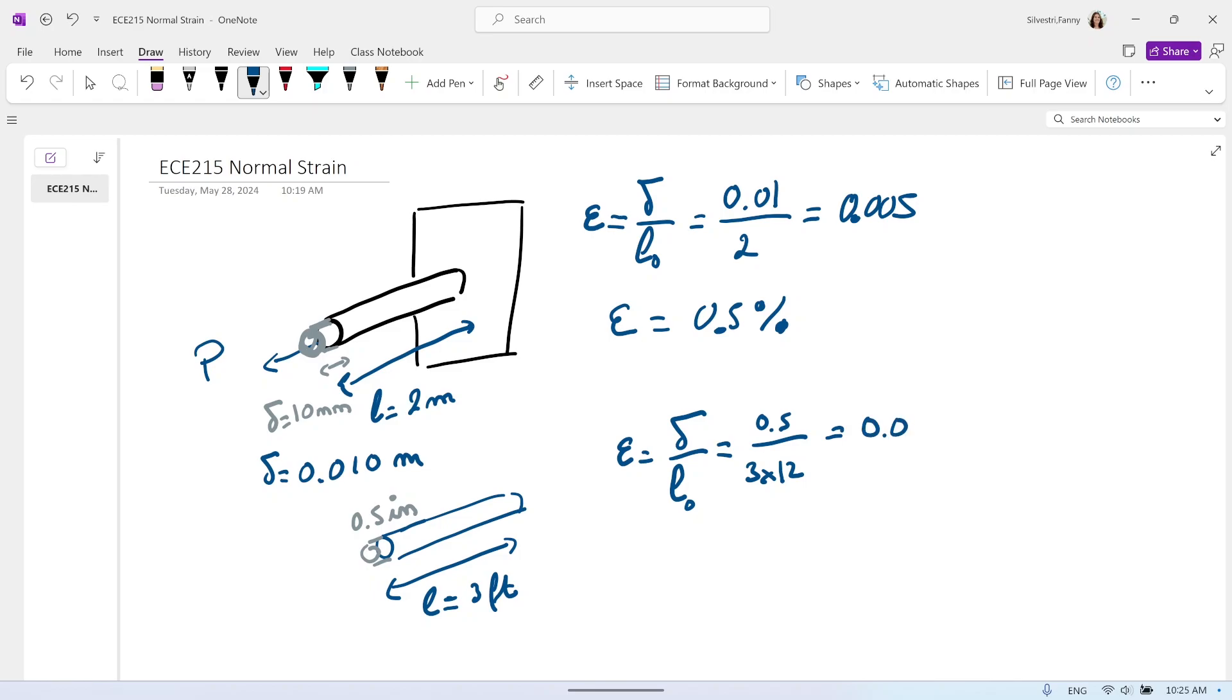So epsilon equal 1.39%. Again, if it's very stiff that will be small. We don't expect the structure or the materials or the parts to have a large strain if it's made with metal.